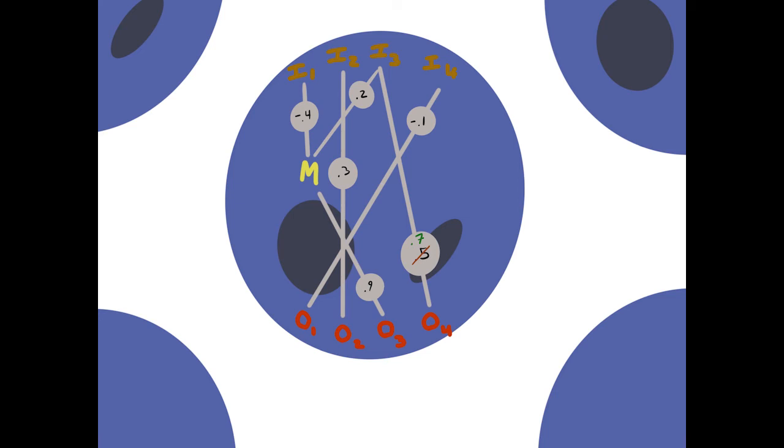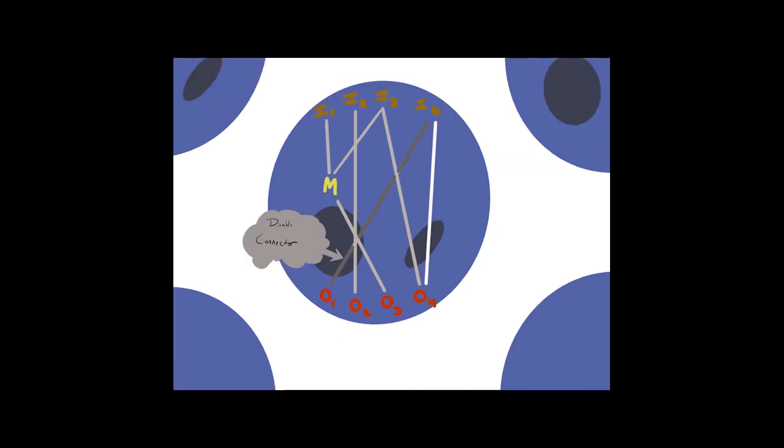Or you can add a brand new neuron connector with a completely random generated weight. Or you can disable a connection node that already exists, removing it from the neural net's decision process.